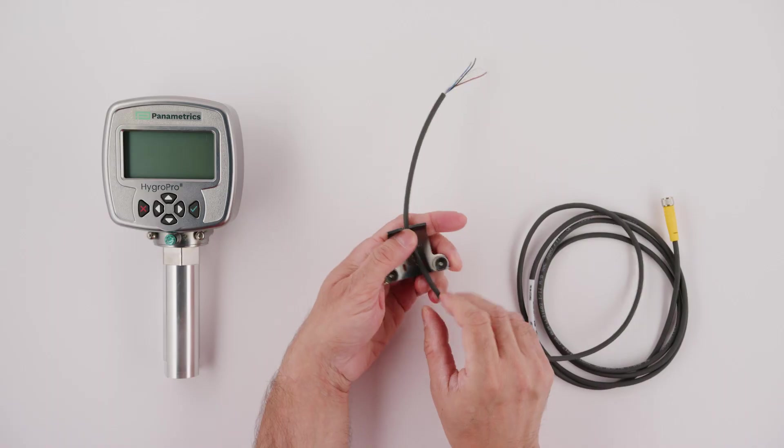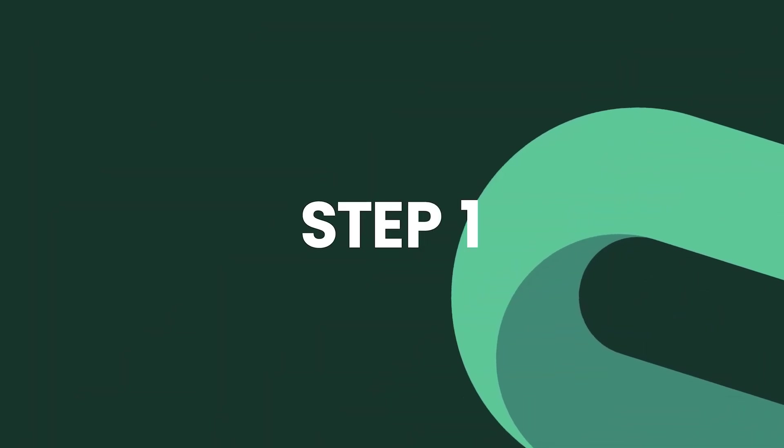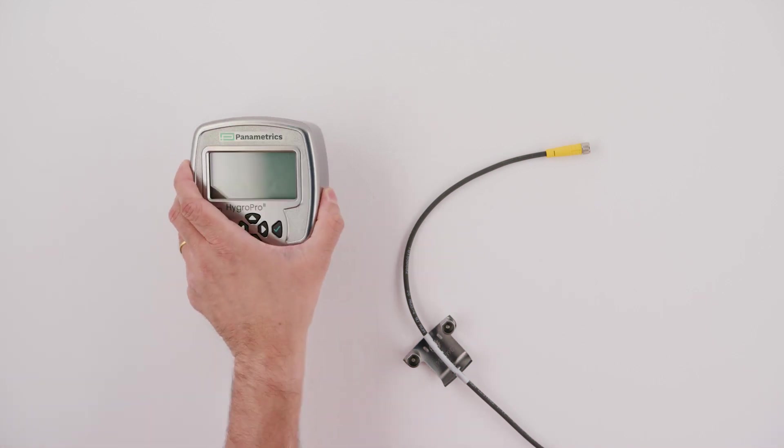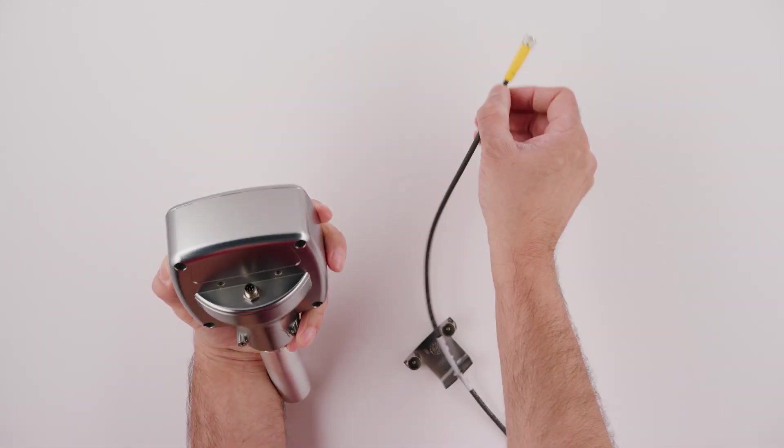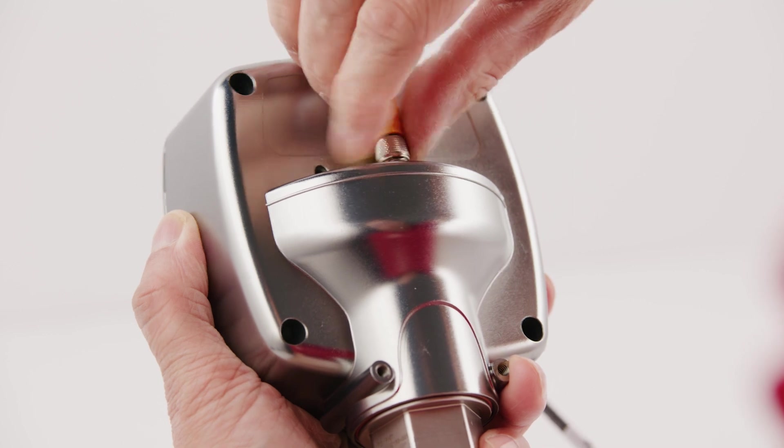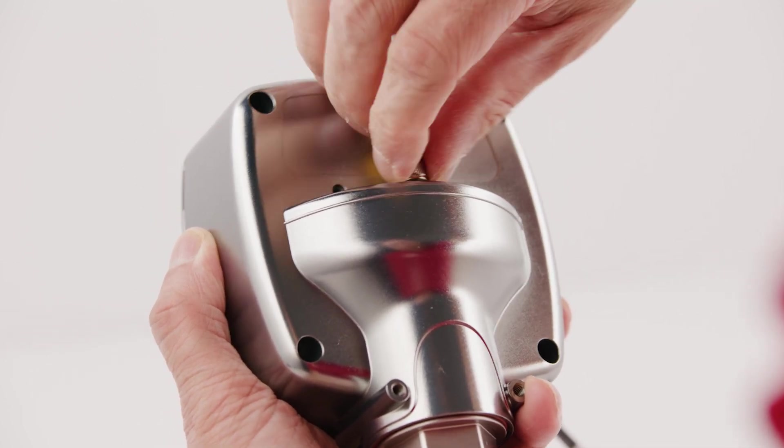Installation of this transmitter can be done in three easy steps. Step 1: Connect the shielded 4-wire cable supplied with the HygroPro 2 to the keyed bulkhead connector on the back of the transmitter using the threaded M8 connector.